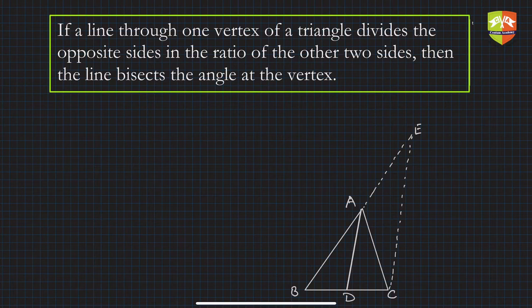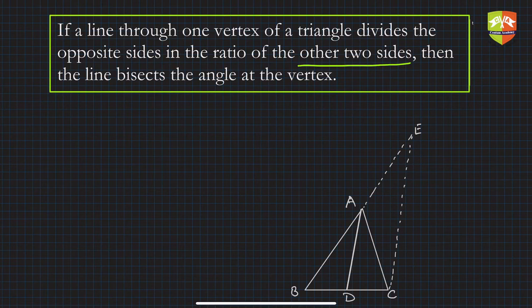What does the converse say? It says: if a line through one vertex of a triangle divides the opposite side in the ratio of the other two sides, then the line bisects the angle at that vertex. So let's understand the theorem first.